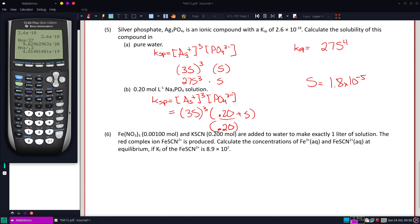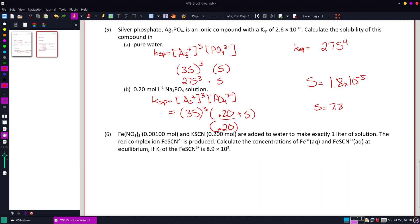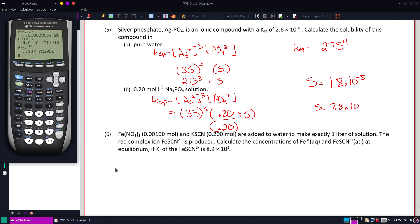And then I'll take the third root of that. And I get solubility down to 7.8 times 10 to the negative 7th.